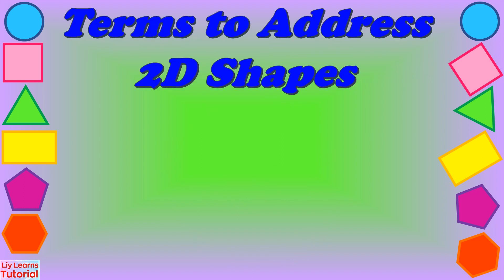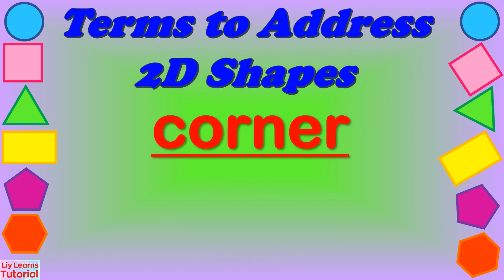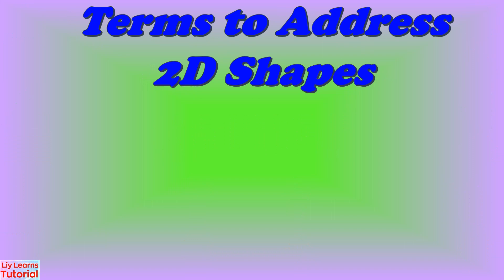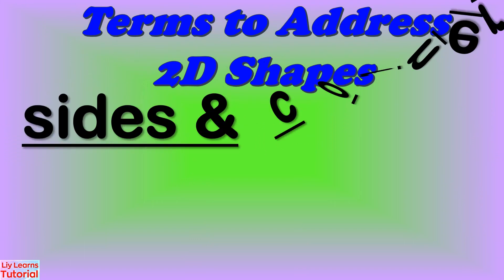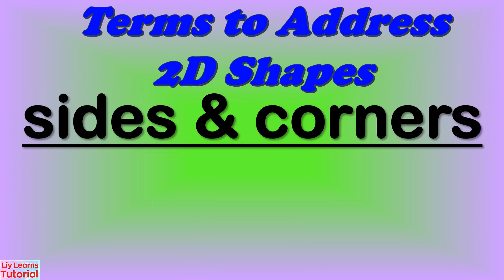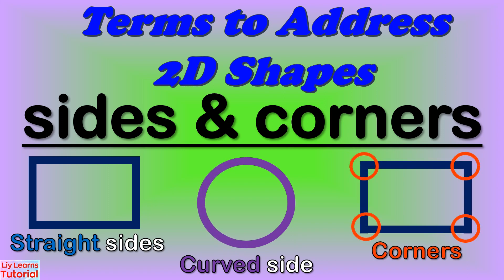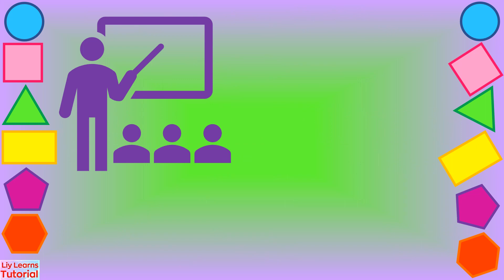The second term is corners. A corner is where two sides meet. Remember the terms sides and corners. It's time for us to look at their properties. Let's begin.